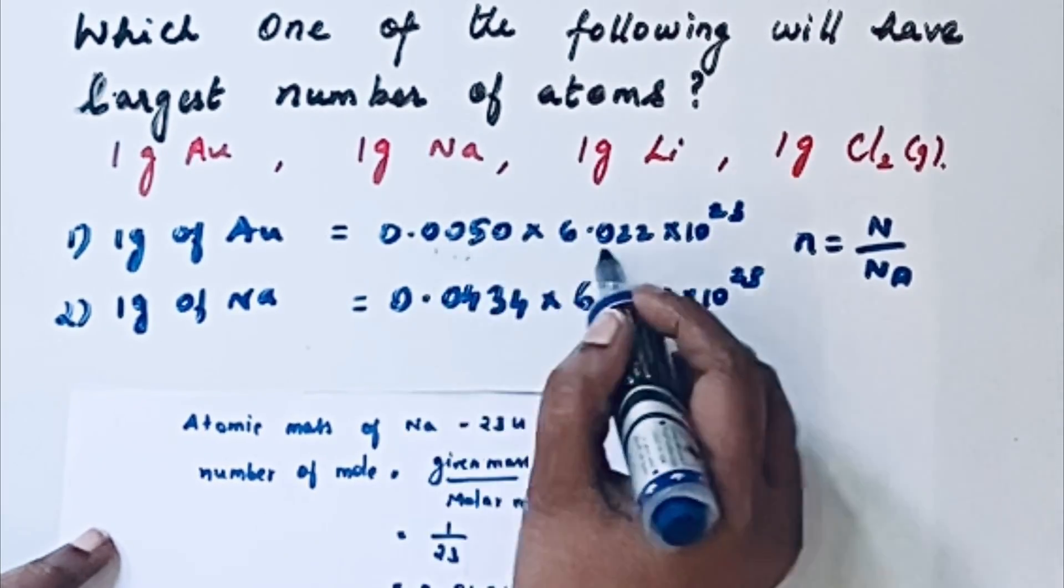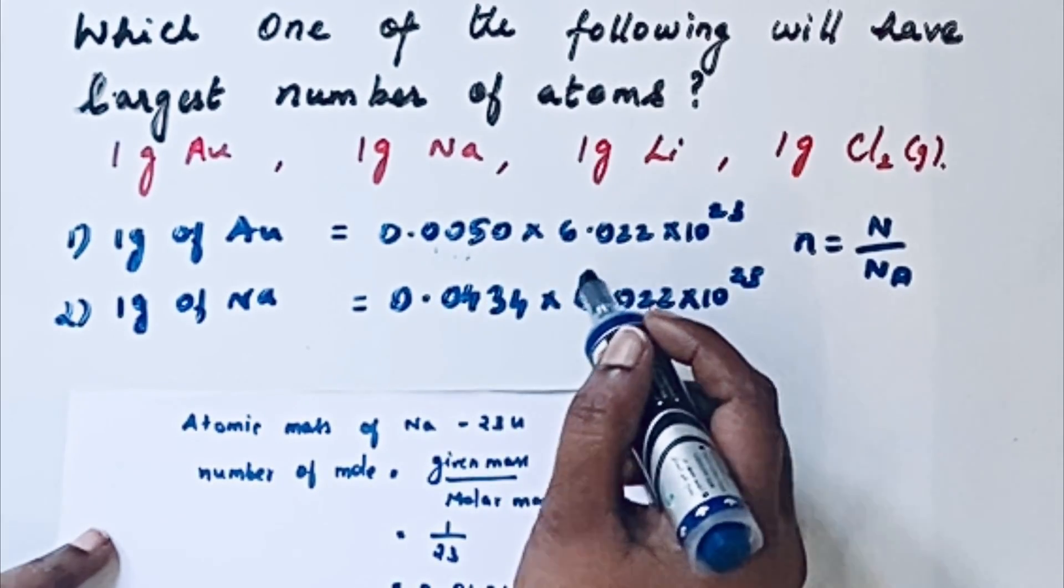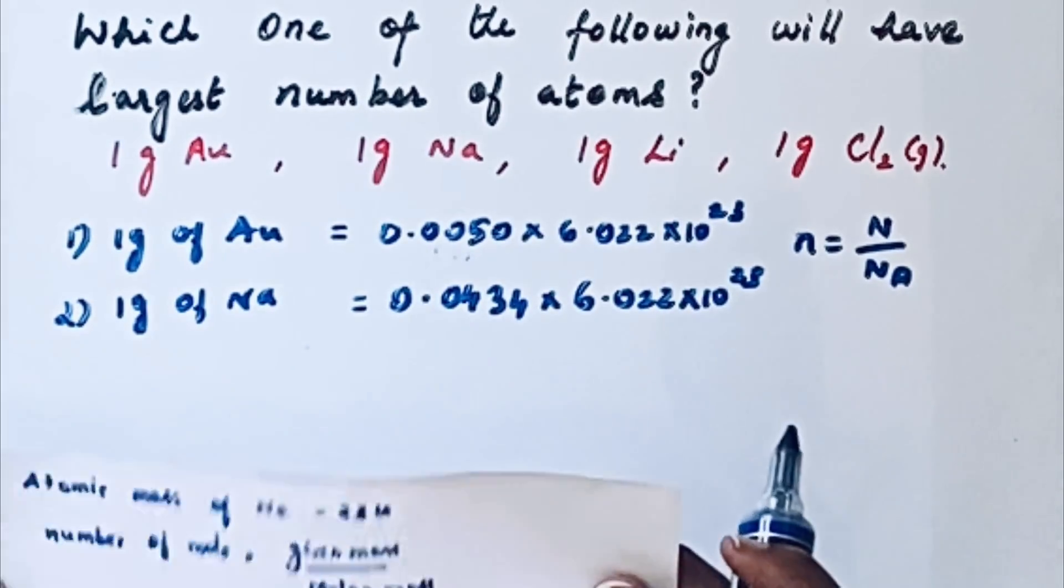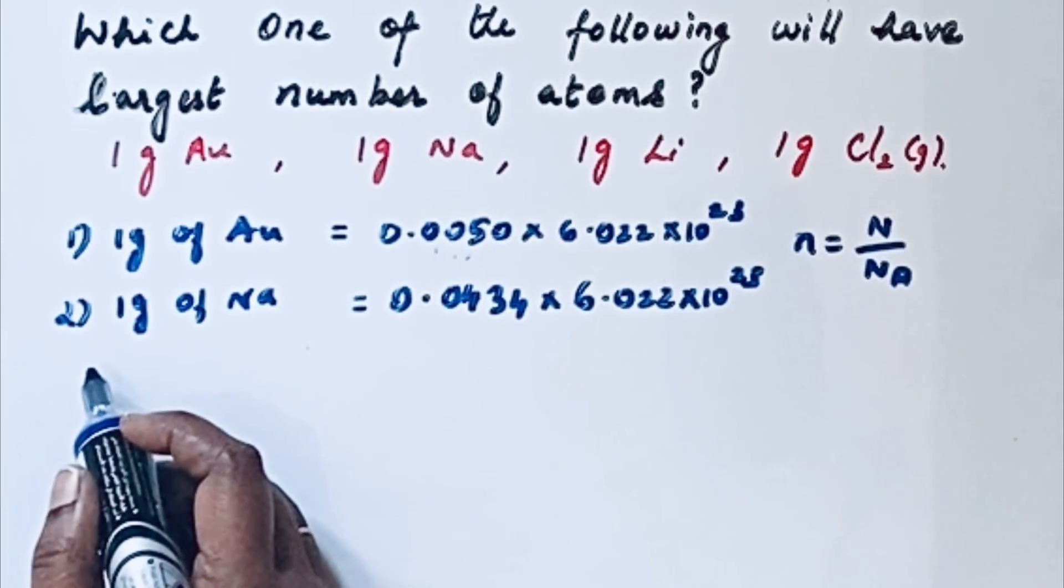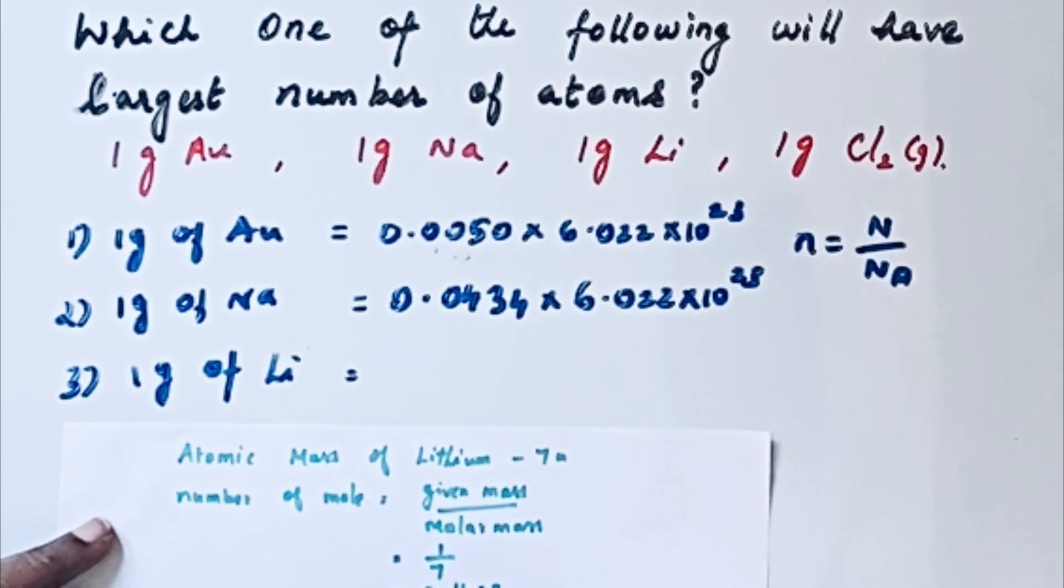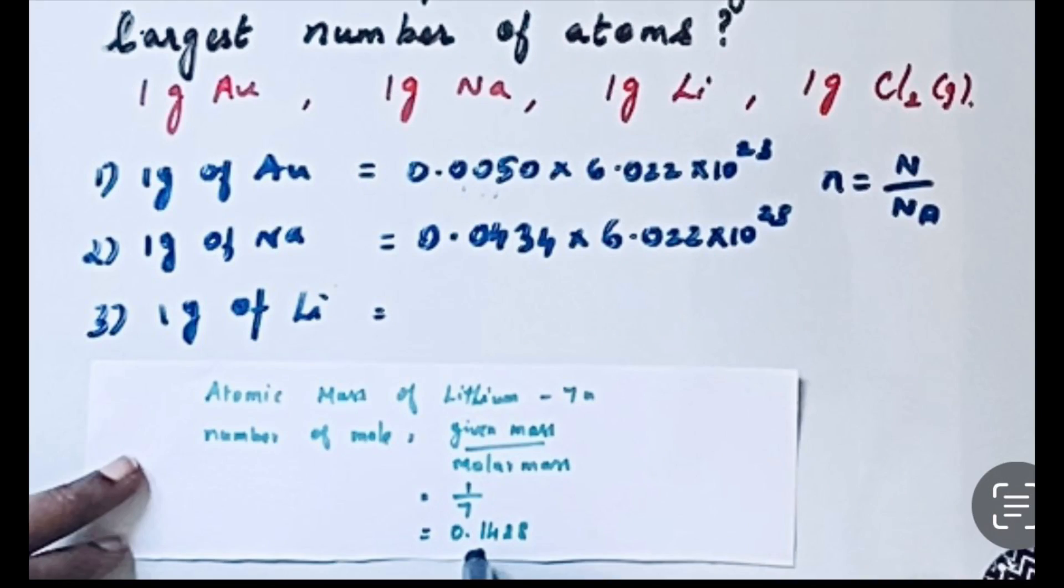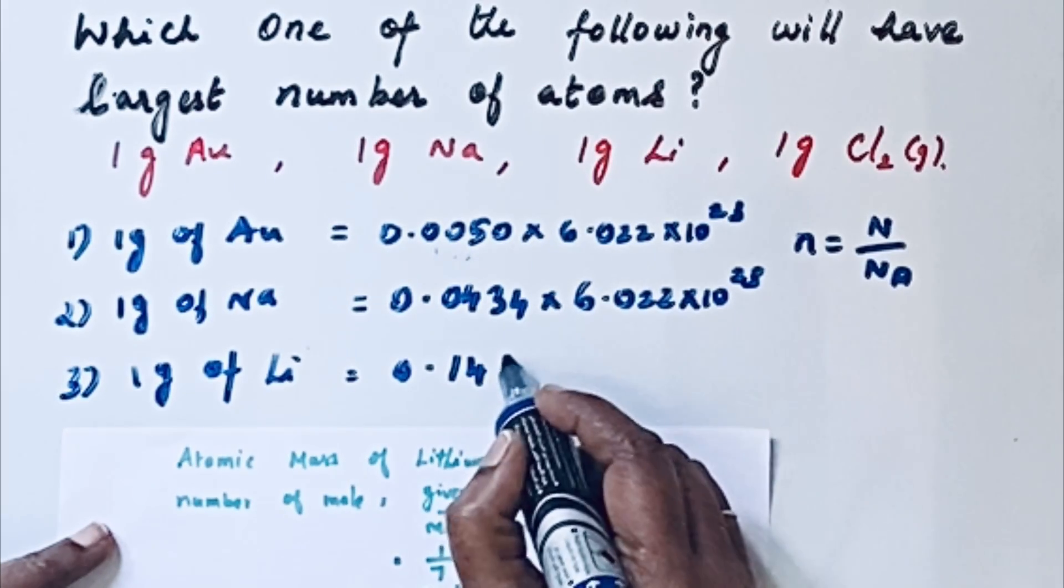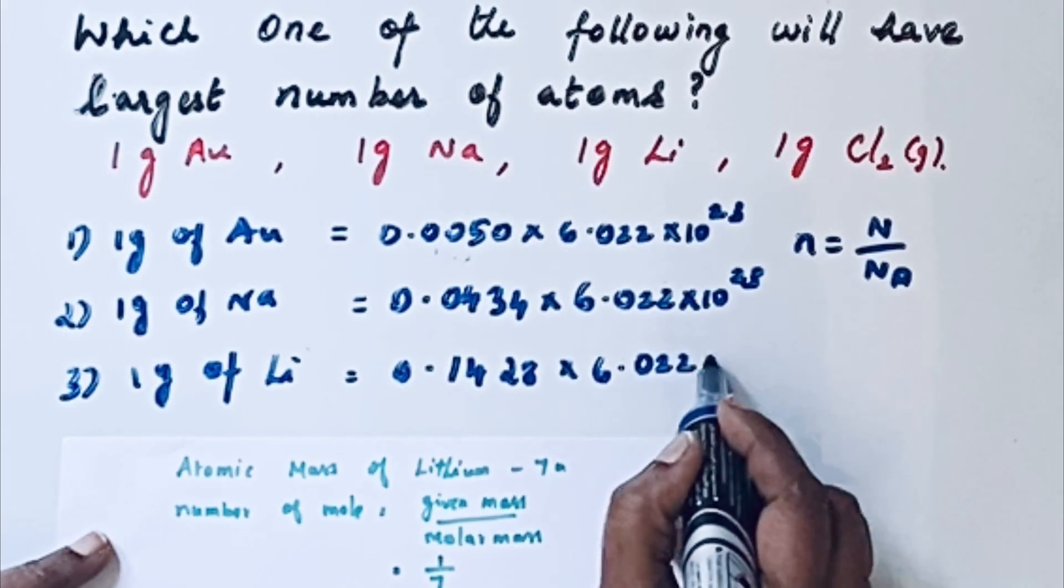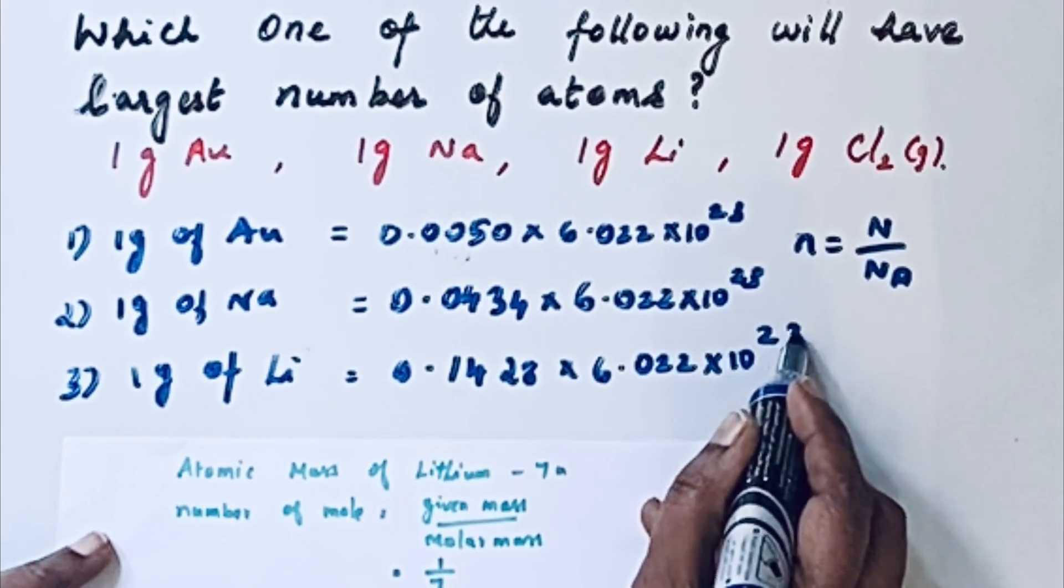There is no need for calculating this one because that is very lengthy, so we will go for a shortcut. Now let us go for the third one, 1 gram of lithium. For lithium, atomic mass is 7 u. As per the formula, 1 by 7, then we will get 0.1428, that into 6.022 times 10 raised to 23 atoms.